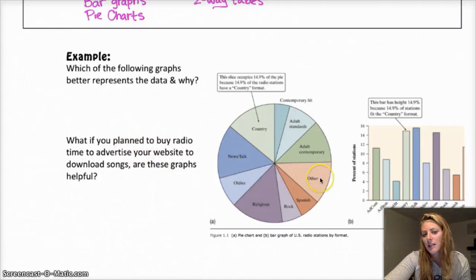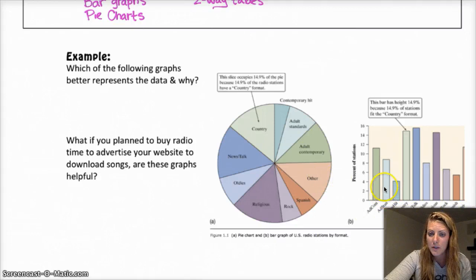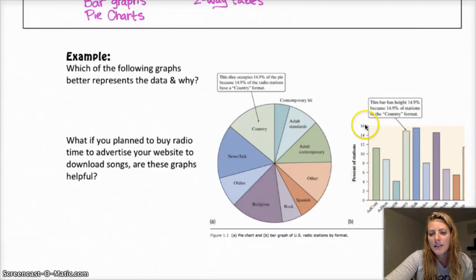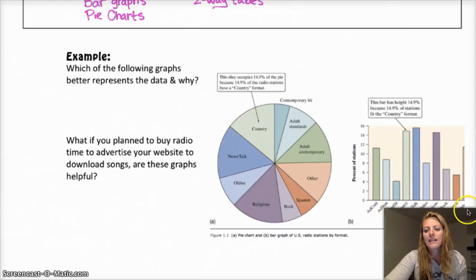Those are more opinion questions than anything. Also, we're going to be doing histograms later, which looks similar to bar graphs, but they're for quantitative data. And the difference between bar graphs and histograms, long story short, is that bar graphs have spaces in between the bars most of the time. Histograms do not most of the time. And histograms are quantitative data and bar graphs are categorical.